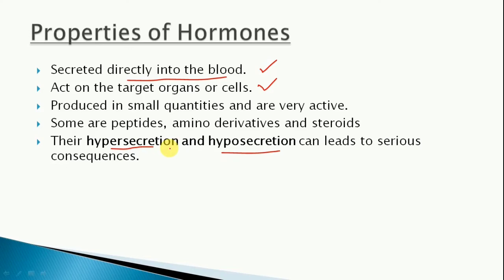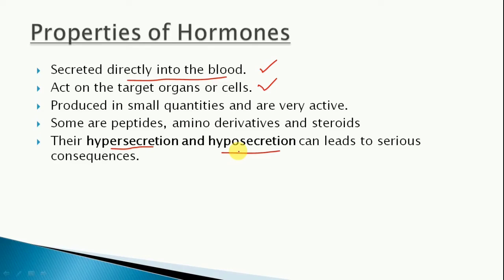Hyper secretion and hyposecretion of hormones can lead to serious consequences. Hyper secretion means the hormone is secreted in excess, crossing the threshold limit. Hyposecretion means the hormone is produced below the threshold limit - below what is needed. Both conditions, whether hyper secretion or hyposecretion, can lead to serious consequences and disorders.